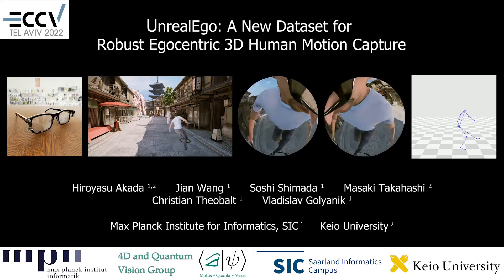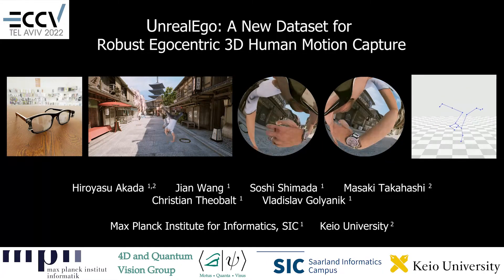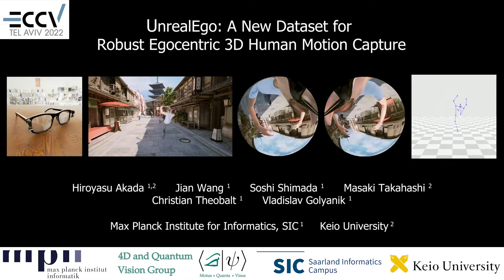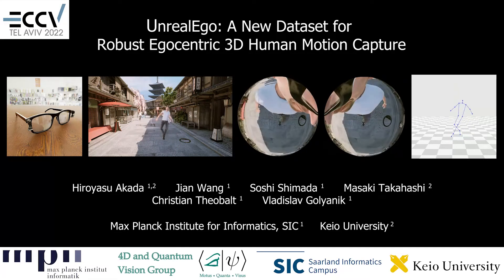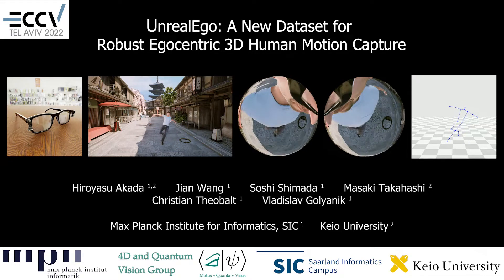We present UnrealEgo, a new large-scale naturalistic dataset for egocentric 3D human pose estimation. UnrealEgo offers eyeglasses-based stereo images and a wider variety of motion that can be seen in daily human activities.